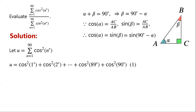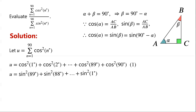By applying this cofunction identity: cosine of 1 degree equals sine of 89 degrees, so cosine squared of 1 degree equals sine squared of 89 degrees. Similarly, cosine squared of 2 degrees equals sine squared of 88 degrees, and so on. Cosine squared of 89 degrees equals sine squared of 1 degree, and cosine squared of 90 degrees equals sine squared of 0 degrees. We label this as expression 2.